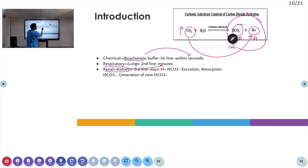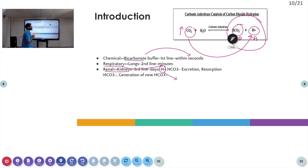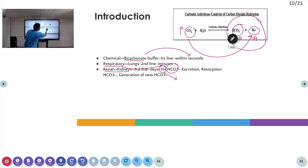It will take a few minutes for the respiratory buffer to act. Finally, the renal or kidney buffer system acts — it will take a few hours to days for the renal system to show its effects. Whenever there is a state of acidosis, the renal buffer causes excretion of H+ ions. Whenever there is alkalosis, the renal buffer causes excretion of bicarbonate ions. The kidney also causes reabsorption of bicarbonate and helps in generation of new bicarbonate ions.